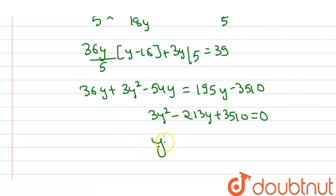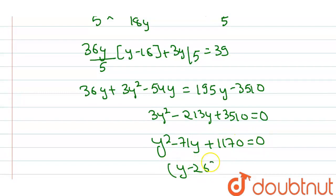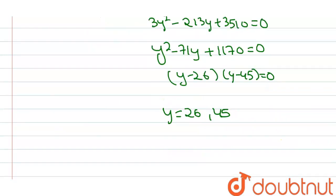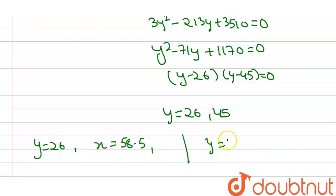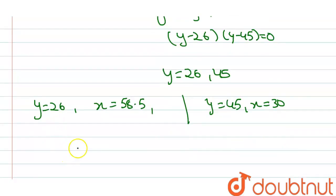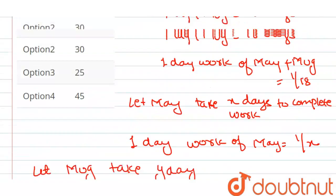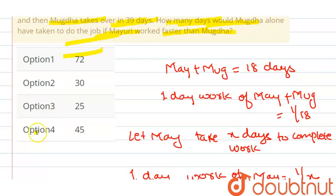इसको और simplify करते हैं — ये value आएगी: Y² − 71Y + 1170 = 0। तो Y की दो values होंगी: (Y − 26)(Y − 45) = 0, so Y = 26 or Y = 45। अब given है कि Mayuri ज्यादा तेज़ काम करती है। If Y = 26 then X = 58.5; if Y = 45 then X = 30। Since Mayuri works faster, Mugda takes 45 days। So option number 4 is the correct answer.